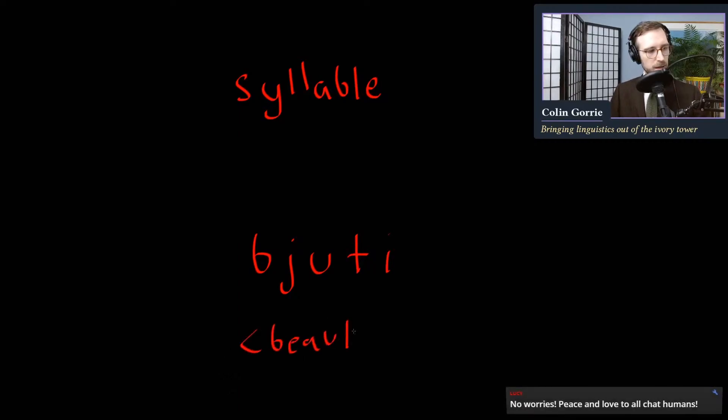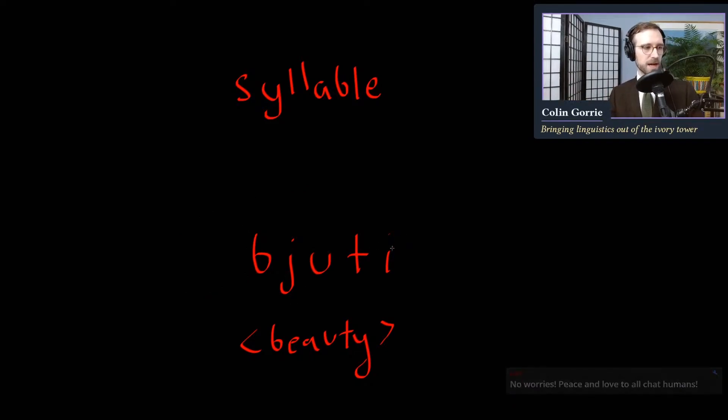And when we have a syllable, we're always looking for the sort of peak of sonority. So let's take an example in English of a syllable. We can probably do something like, what's a good English, something like beauty. So this is going to be our word, beauty. And let's look at what kind of sounds we have here. We have a stop, we have a semi-vowel, we have a vowel, we have a stop and a vowel.